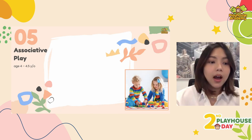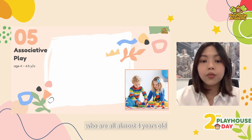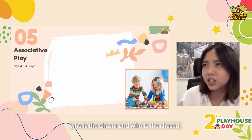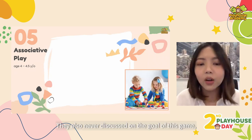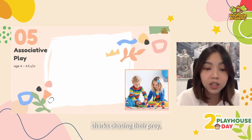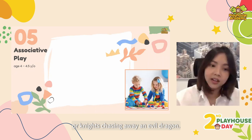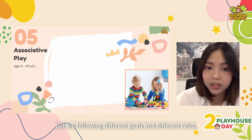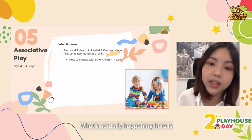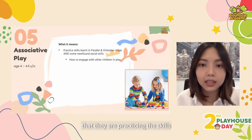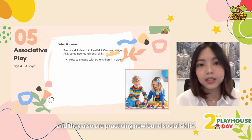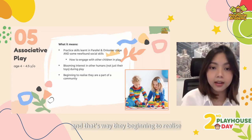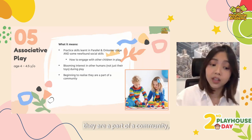For example, there are three kids who are all almost four years old and they're using the same playground. They start laughing, running, and chasing around each other, but they don't seem to have agreed who is the chaser and who is being chased. They've also never discussed the goal of this game — whether they're sharks chasing their prey or knights chasing away the evil dragon. They're all having fun but just following different goals and different rules. What is actually happening here is that they are practicing the skills learned during the previous stages and also practicing some newfound social skills. There's a blooming interest in other humans during play, and that's why they're beginning to realize that they are a part of a community.